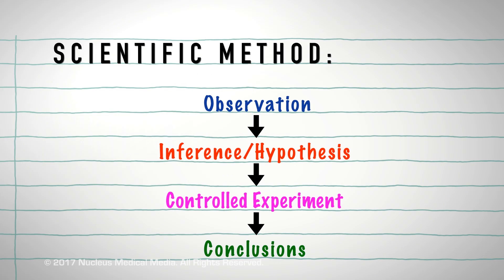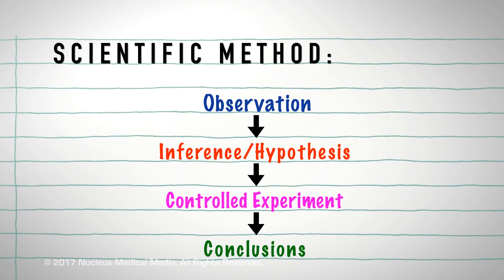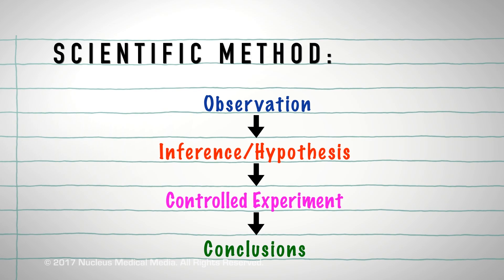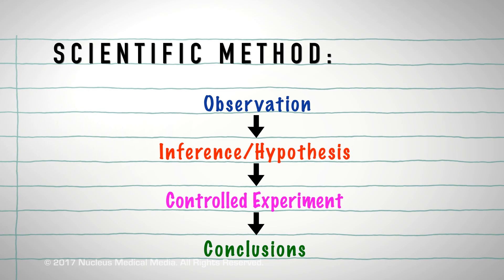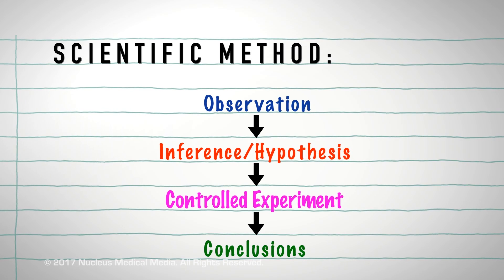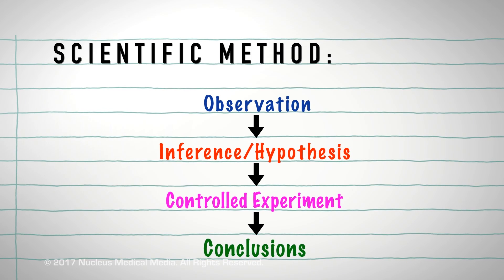In review, the basic steps of the scientific method are making an observation, forming an inference and developing a hypothesis, conducting a controlled experiment, and drawing conclusions.